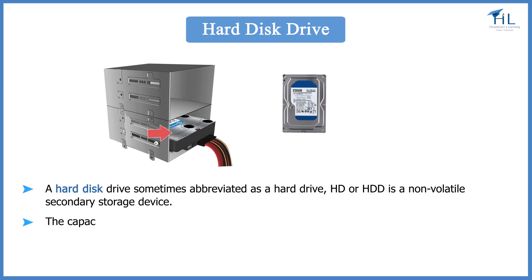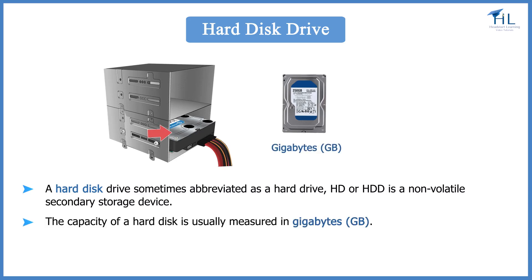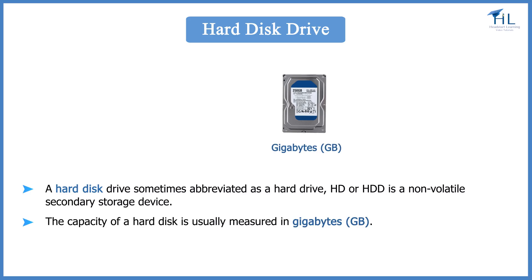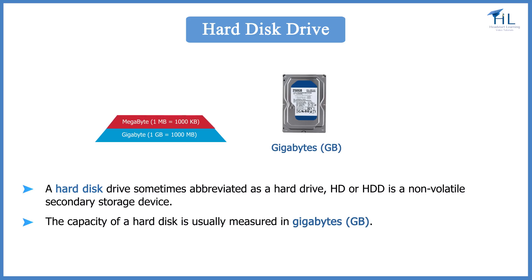The capacity of a hard disk is usually measured in gigabytes. A gigabyte is 1,000 megabytes, a megabyte is 1,000 kilobytes, and 1 kilobyte is 1,000 bytes, which means that a gigabyte is 1,000,000,000 bytes.